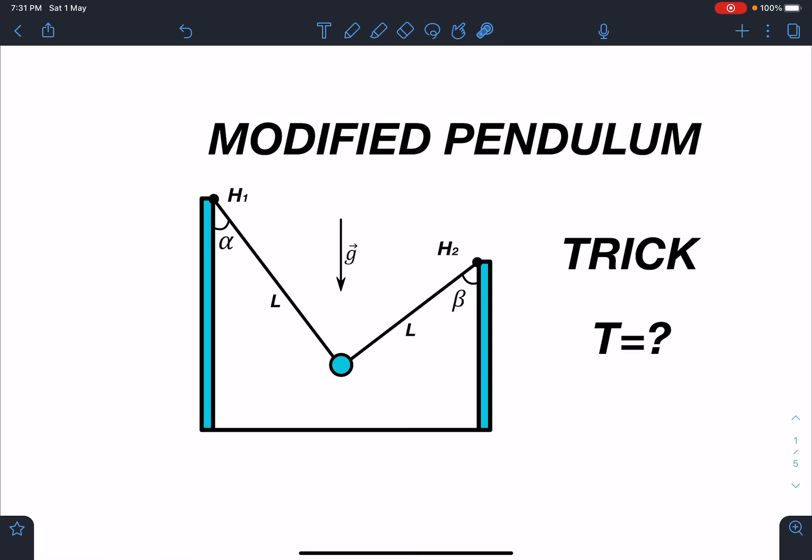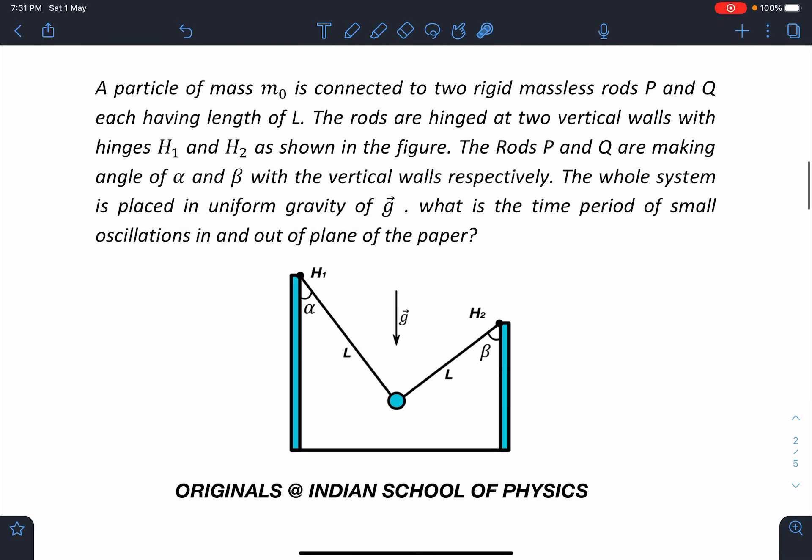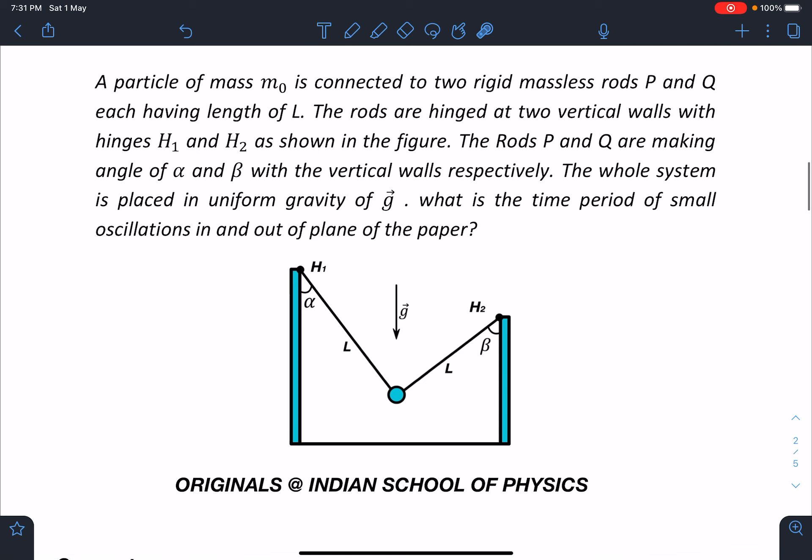It's a modified pendulum. So here is the statement of this problem. A particle of mass M0 is connected to two rigid massless rods P and Q each having length L. The rods are hinged at two vertical walls with hinges H1 and H2 as shown in the figure. The rods P and Q are making angles of alpha and beta with the vertical walls respectively.